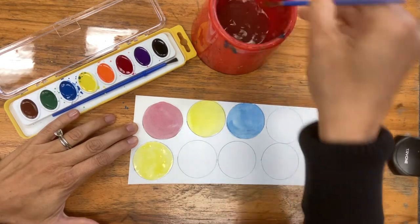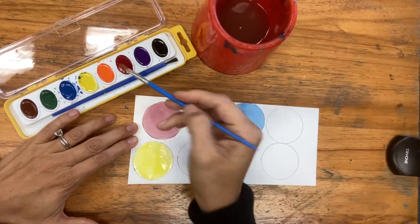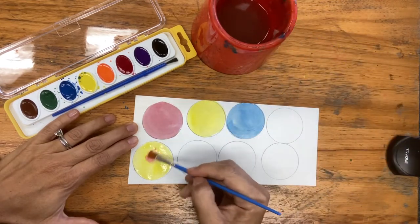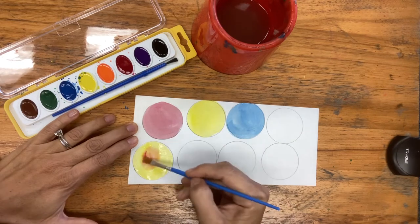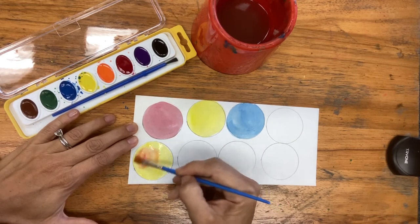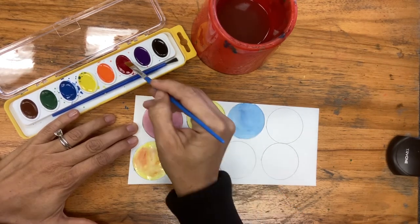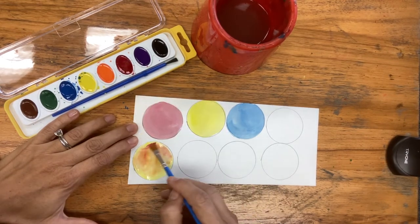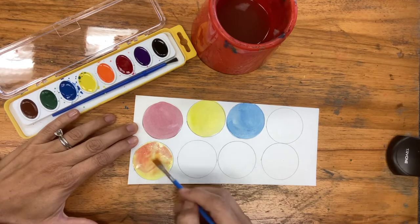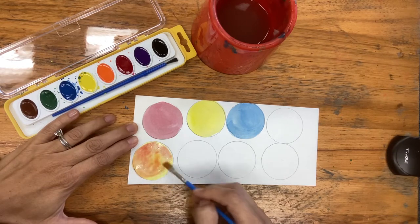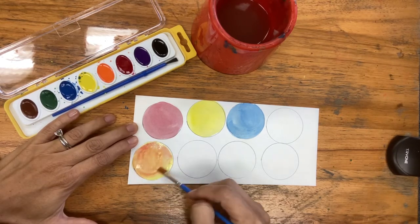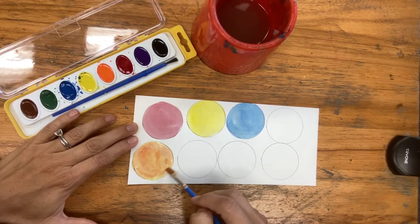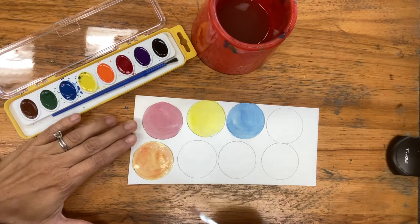I'm going to rinse my brush, get a little tiny bit of red, not too much at all, and I will start mixing it onto that yellow. I can already see my orange coming up. So I have my orange gumball.